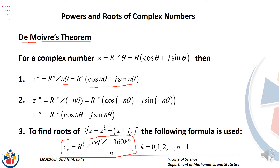Note k starts from 0 to n minus 1. So if you've got the cube root of z, that means you will have three roots with k starting from 0 to 2, and you substitute the value of k with n equal to 3. Note that for the nth root of a complex number you'll have n roots starting from k equal to 0 to n minus 1.